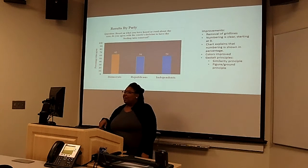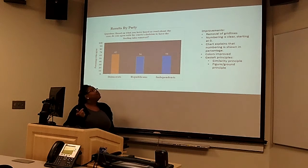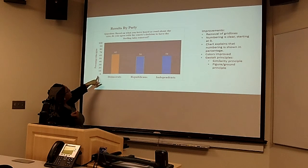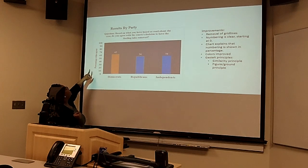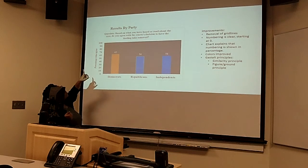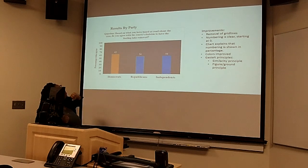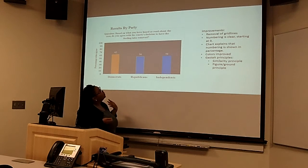In this chart, these are my improvements to the previous chart. I removed the grid lines and changed the background color, and I also started the numbering from 0 to 100. I did state that these numbers represent the percentage of who agreed. And the question that this graph is asking is: based on what you've heard or read about the case, do you agree with the court's decision to have the feeding tube removed?